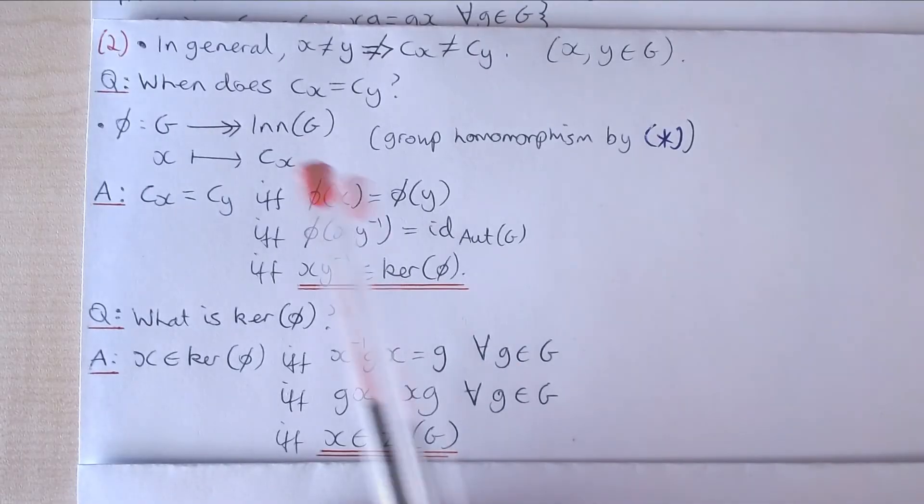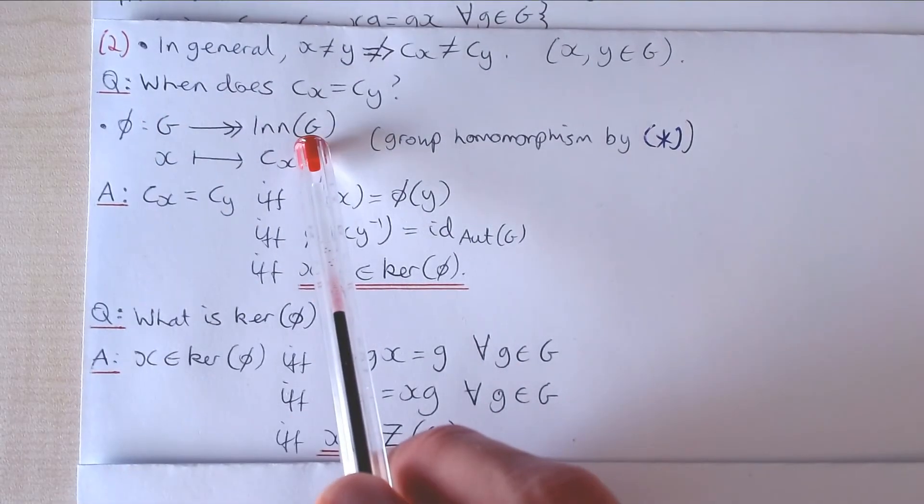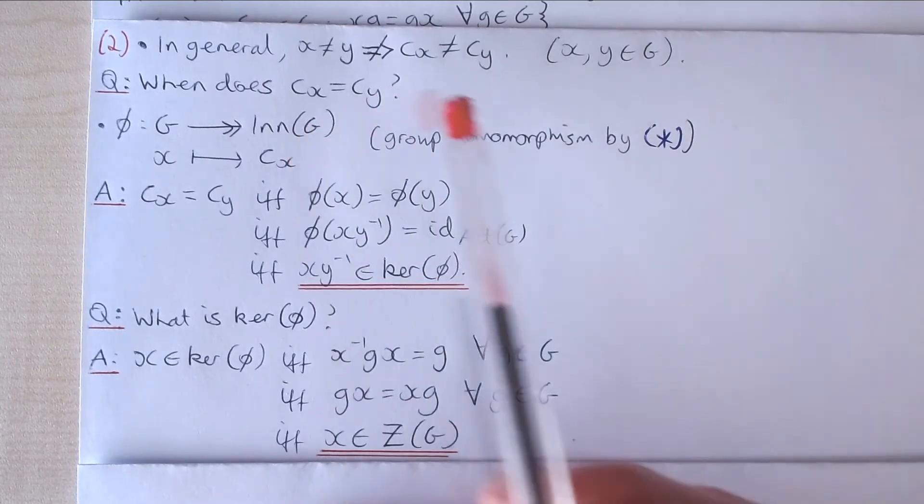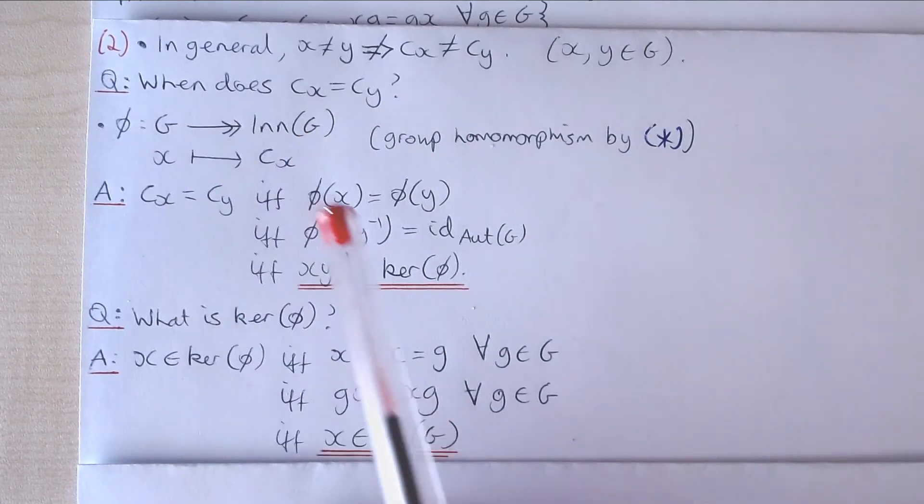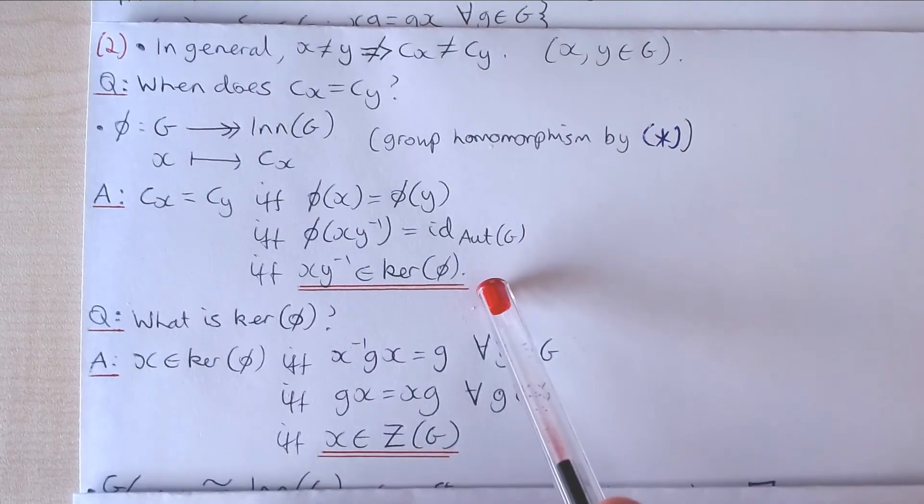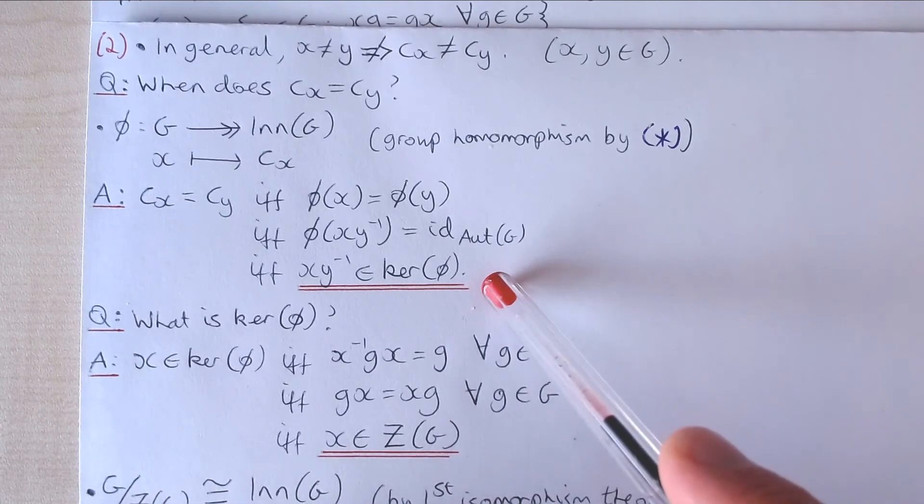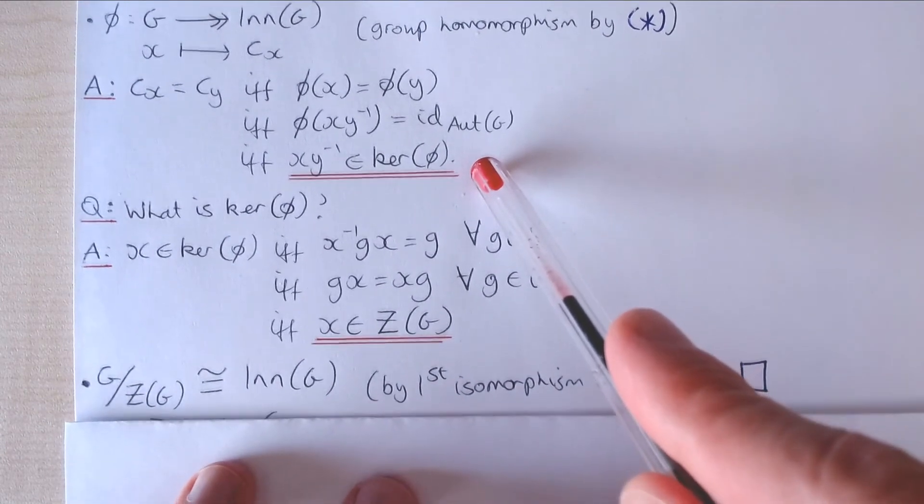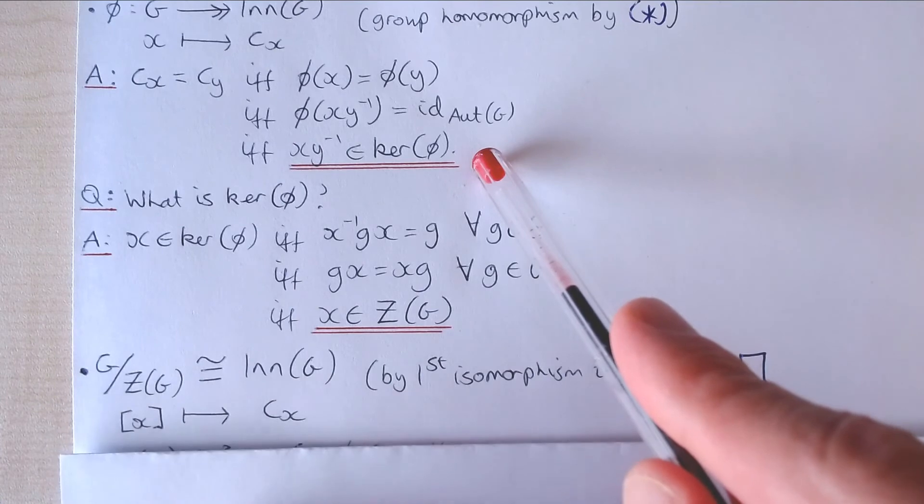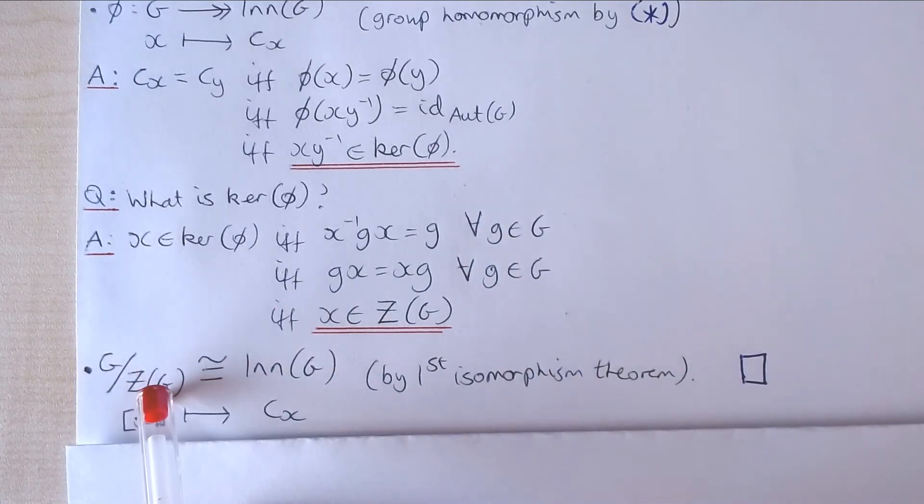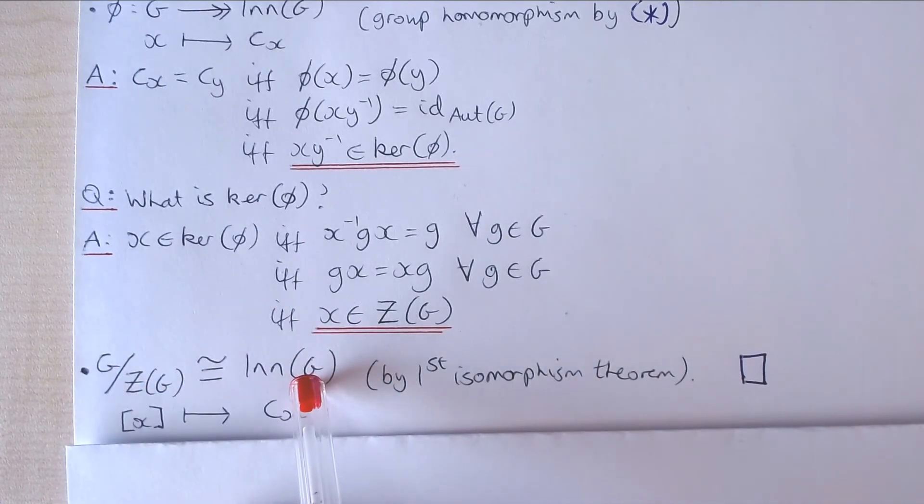So we have that the image of phi is the group of all inner automorphisms of G. We've just established that its kernel is the centre of G. So by the first isomorphism theorem for groups, we have that the quotient of G by its centre is isomorphic to the group of inner automorphisms of G.